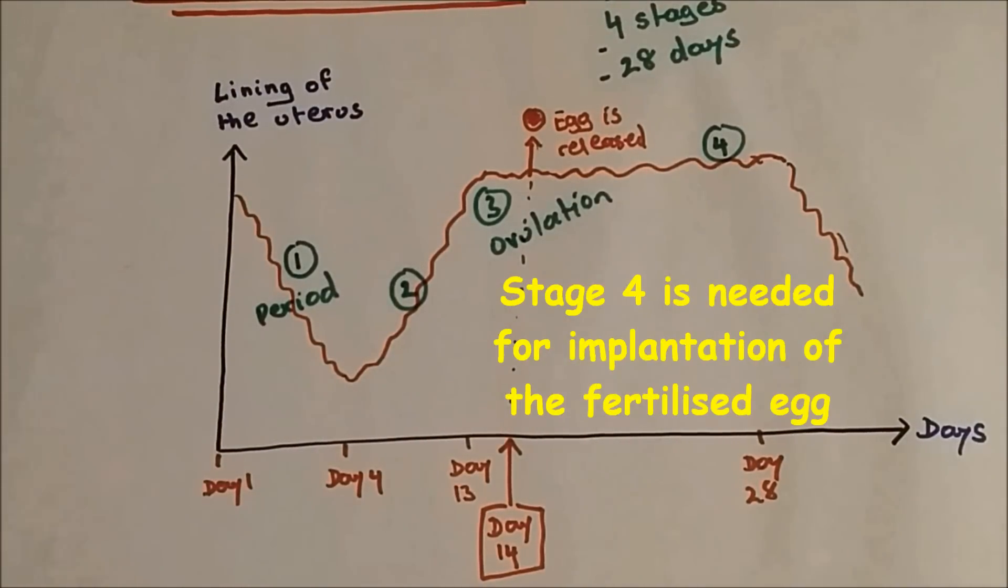Now why is the lining of the uterus maintained? The lining of the uterus is maintained so that the fertilized egg can be implanted into the lining of the uterus, and this is called implantation.